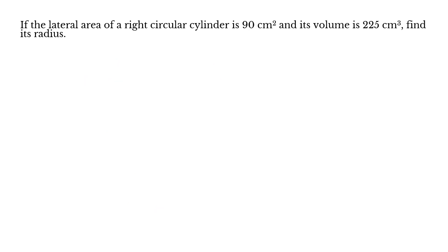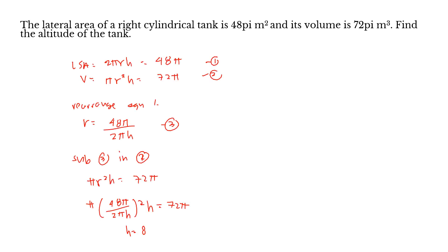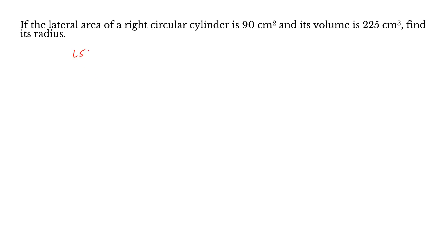Number 2: If the lateral area of a right circular cylinder is 90 cm² and its volume is 225 cm³, find its radius. Similar to earlier, class. Earlier we found the height; this time we find the radius. Given: lateral surface area 2πrh = 90, and volume πr²h = 225.